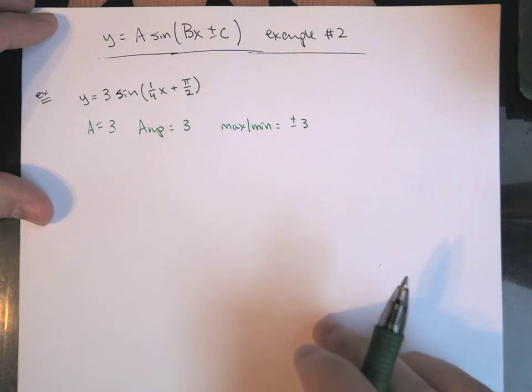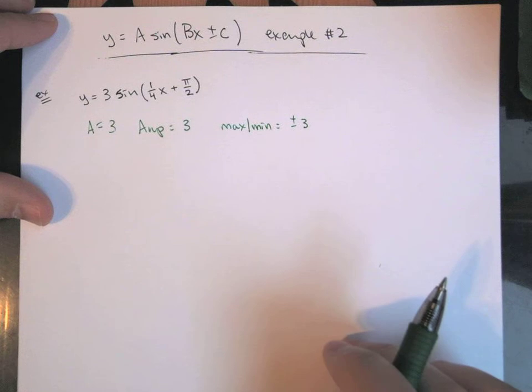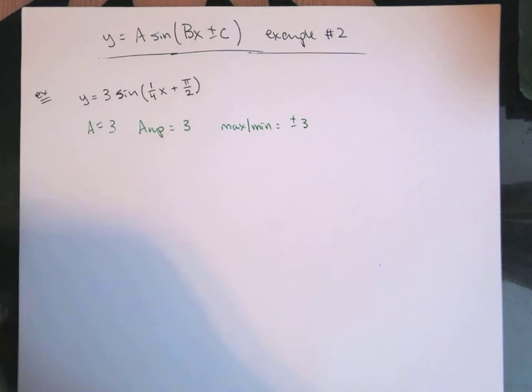This is just a positive 3 in front, so we're still going to have our usual pattern: the middle, the max, the middle, the minimum, and then back to the middle.